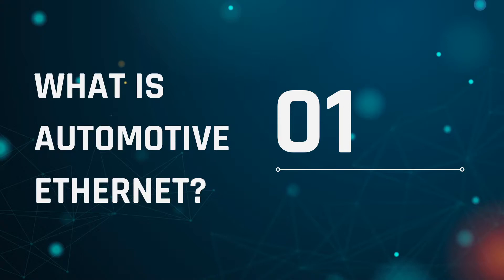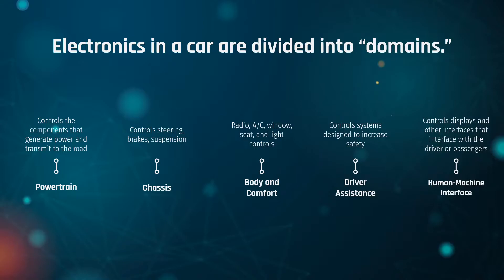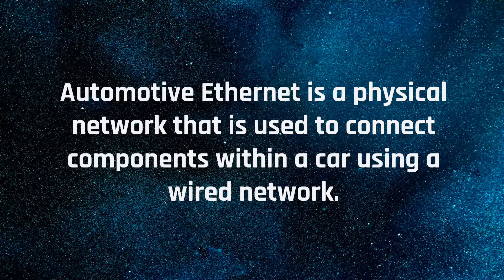Let's dig into what exactly is Automotive Ethernet. Electronics in a car are split up into things called domains: the powertrain domain, body and comfort domain, the human machine interface, driver assistance, and chassis. These do anything from control steering and braking, all the way to controlling your radios, windows, and seating, as well as allowing humans to interface with controls. Automotive Ethernet is a physical network used to connect components within a car using wires.